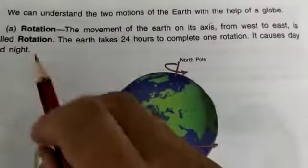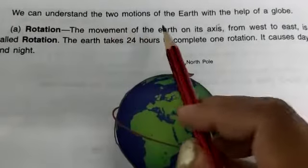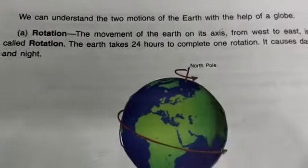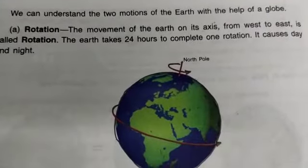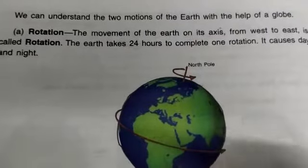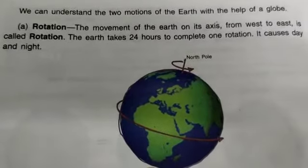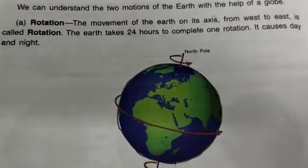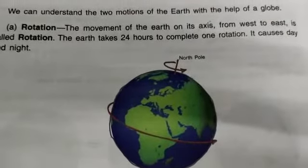We can understand the two motions of the Earth with the help of a globe. With the help of the globe, we can know about the two motions of the Earth. I have told you that the two motions are rotation and revolution. The globe helps us to understand these motions.